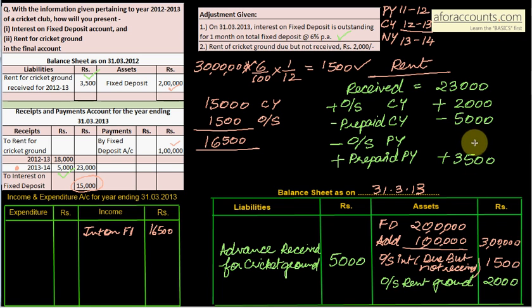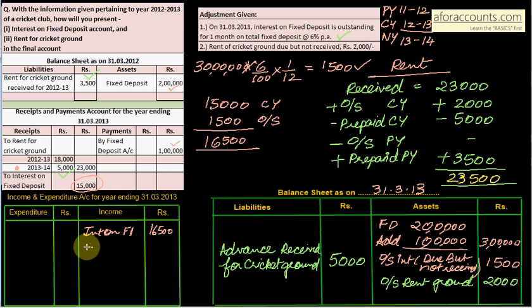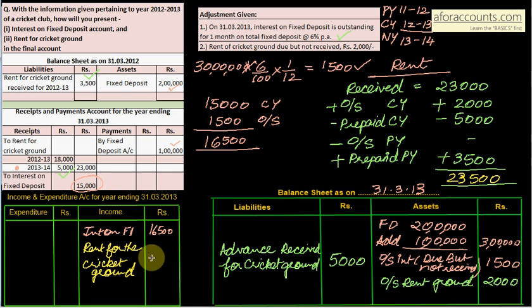Final rent calculation: 23,000 received + 2,000 outstanding − 5,000 prepaid + 3,500 previous year prepaid = 23,500. This is the actual income for the current year, irrespective of whether received or not. So 23,500 goes to the income and expenditure account as 'Rent for cricket ground.' This is how we handle adjustments for rent and fixed deposit.